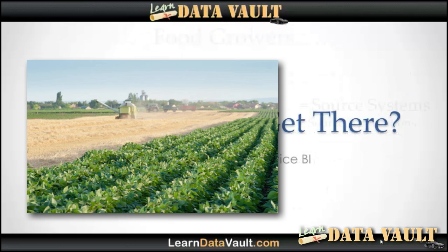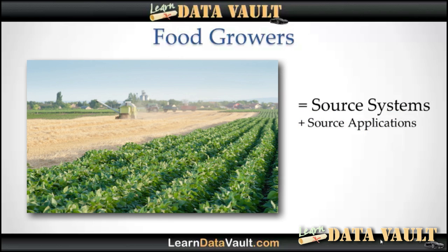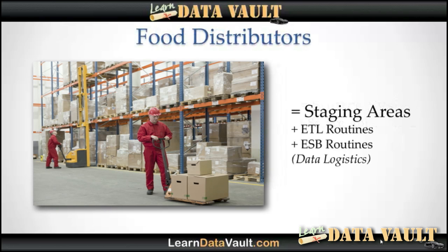To get to a self-service BI solution, first you've got the food growers — the farms — which are the source systems providing raw data. Then you've got the distributors, the middlemen who take all this raw produce, washed and cleaned a bit. All the tomatoes are in one area, cucumbers in another. Distributors stock things together in large groups but don't mix them at the distribution site. Sometimes they repackage pallets into smaller packaging units for distribution.